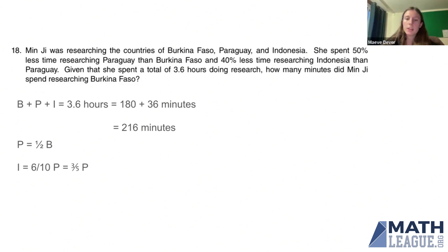It means that I is 60%. Because it's not 40% as much time, it's 40% less time. So, good trap to avoid there. And now we've got our two equations. P is 1 half B. I is 3 fifths P. 6 tenths, right? 3 fifths. We can simplify fractions.